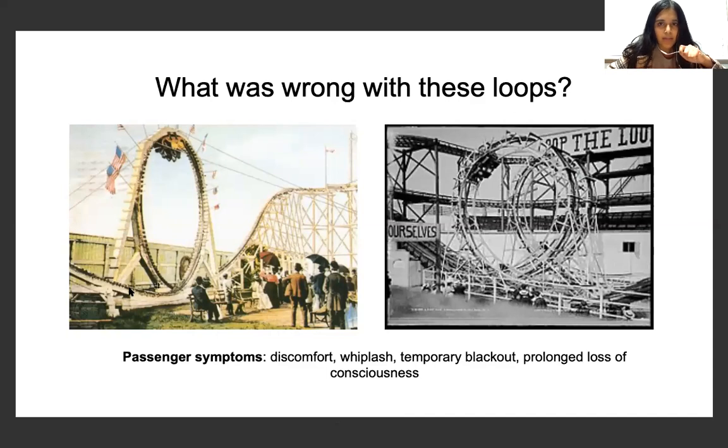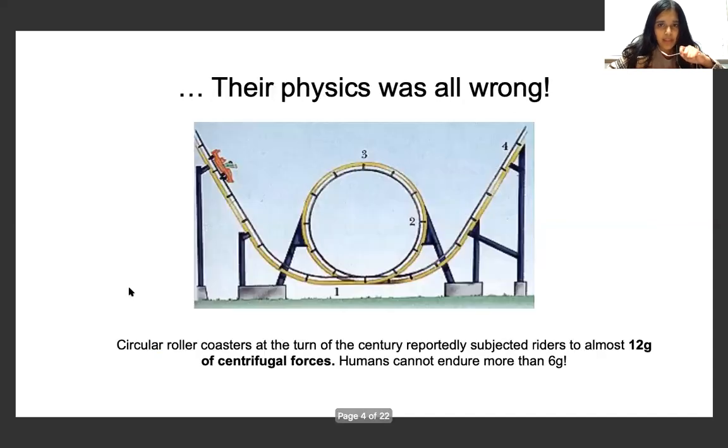But what was specifically wrong about them? We'll be taking a look. So these circular roller coasters reportedly subjected riders to almost 12G of centrifugal forces. And humans can't endure more than 6G. And even though they didn't know this at the time, these roller coasters were very dangerous, and so they got shut down almost 10 or 20 years after they went into operation.